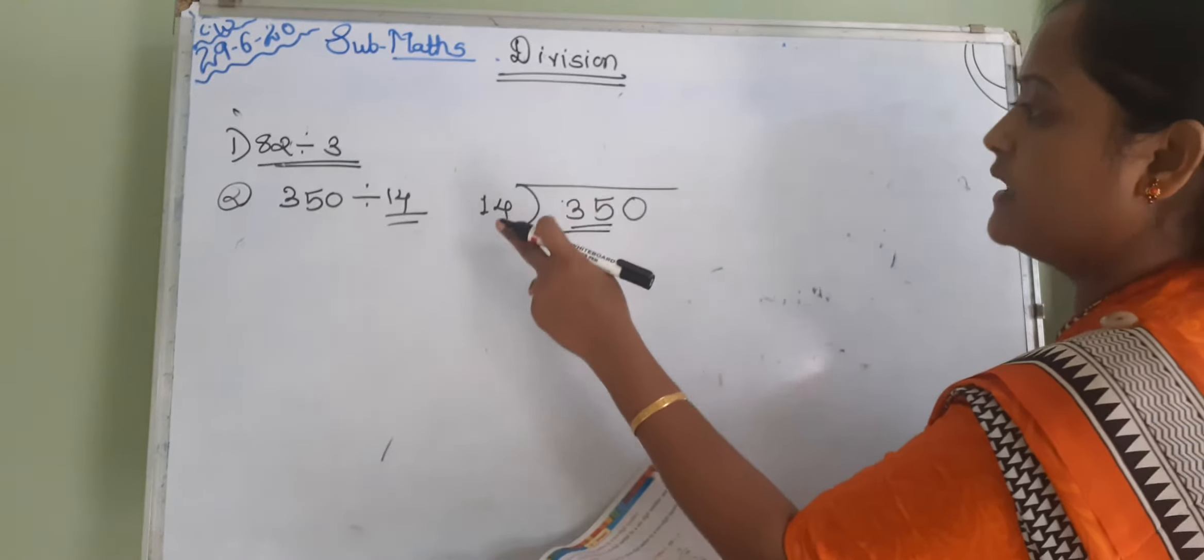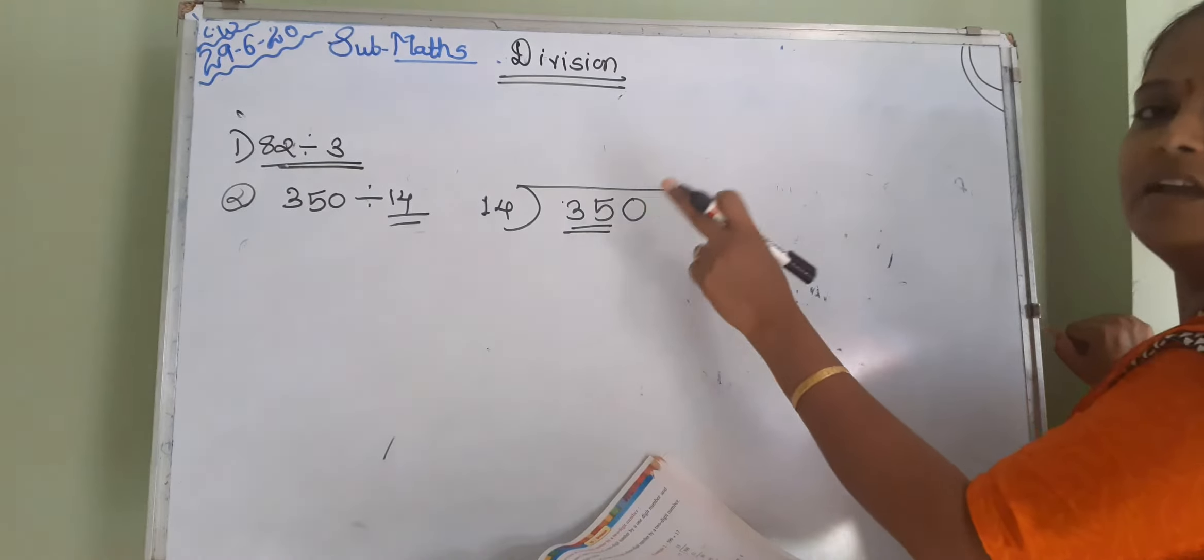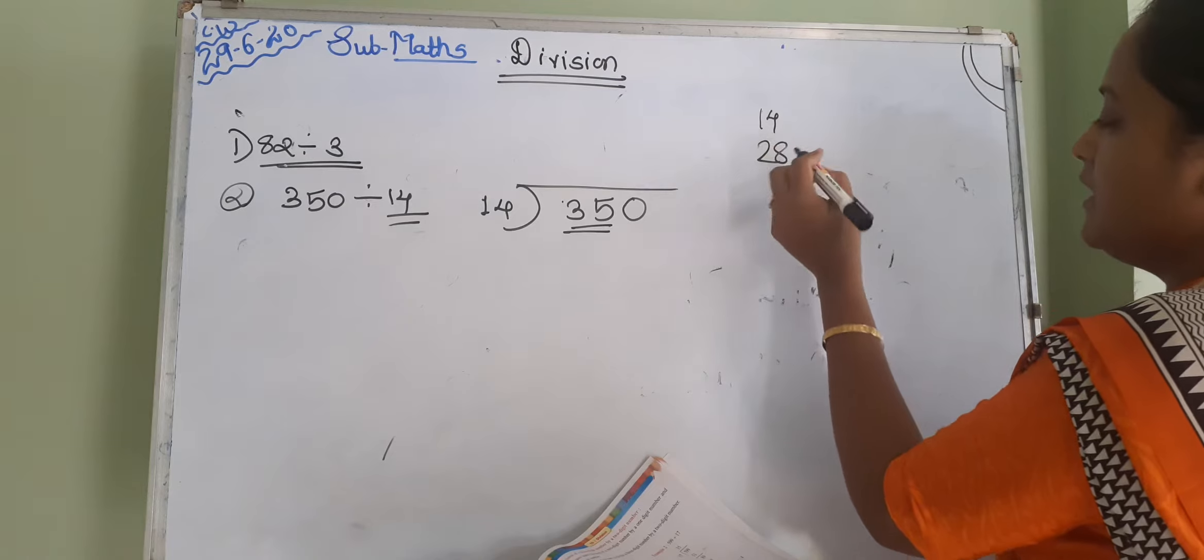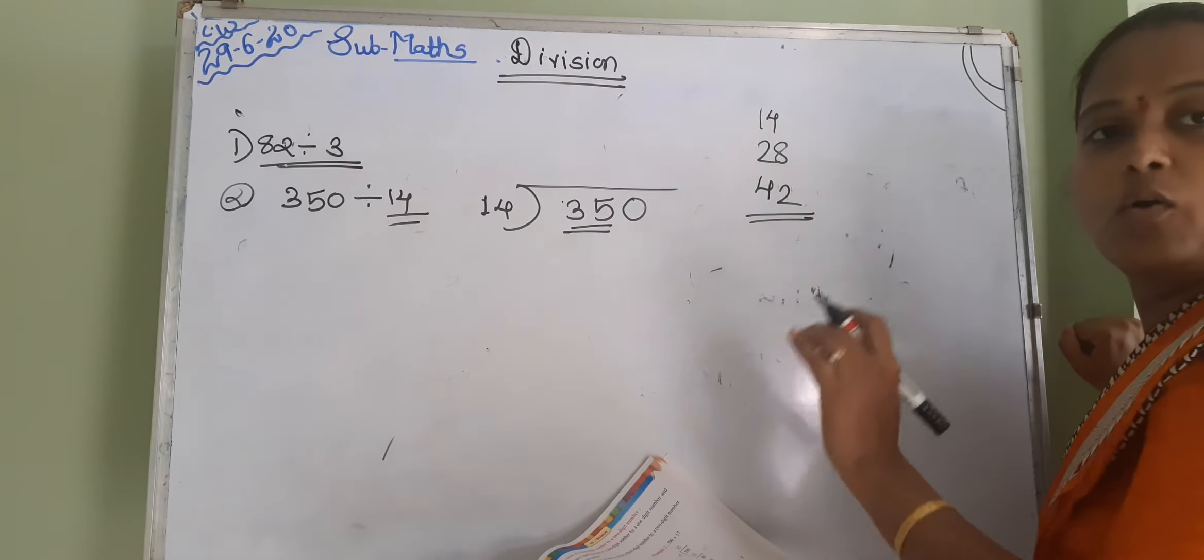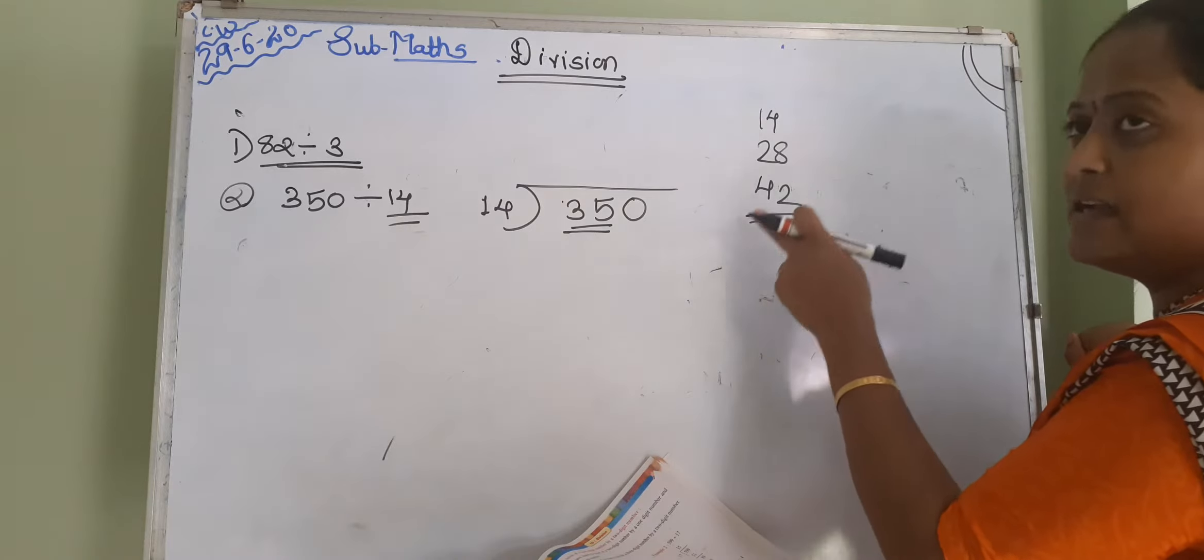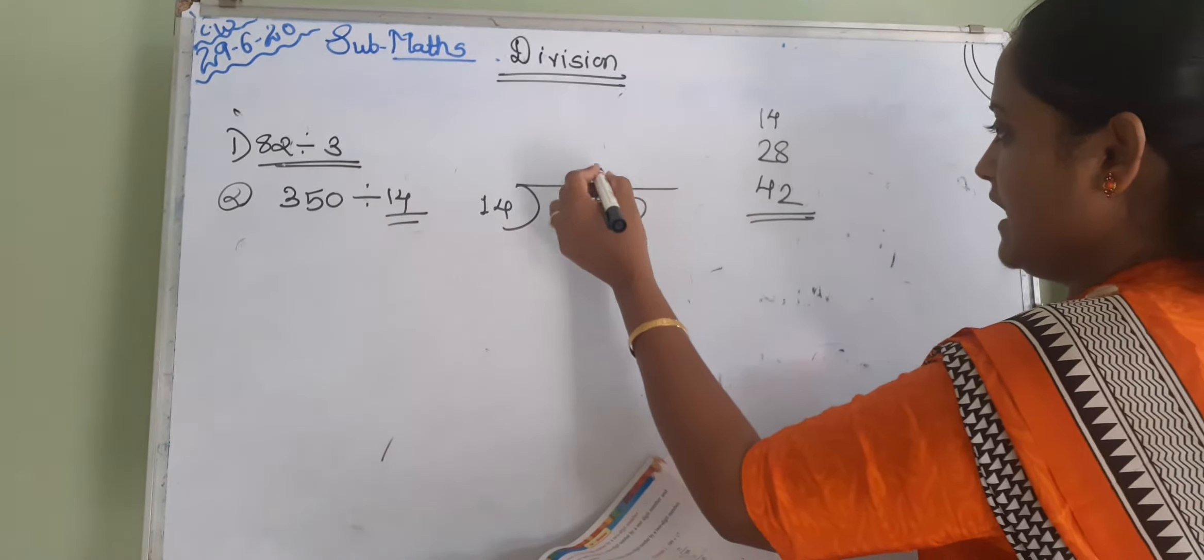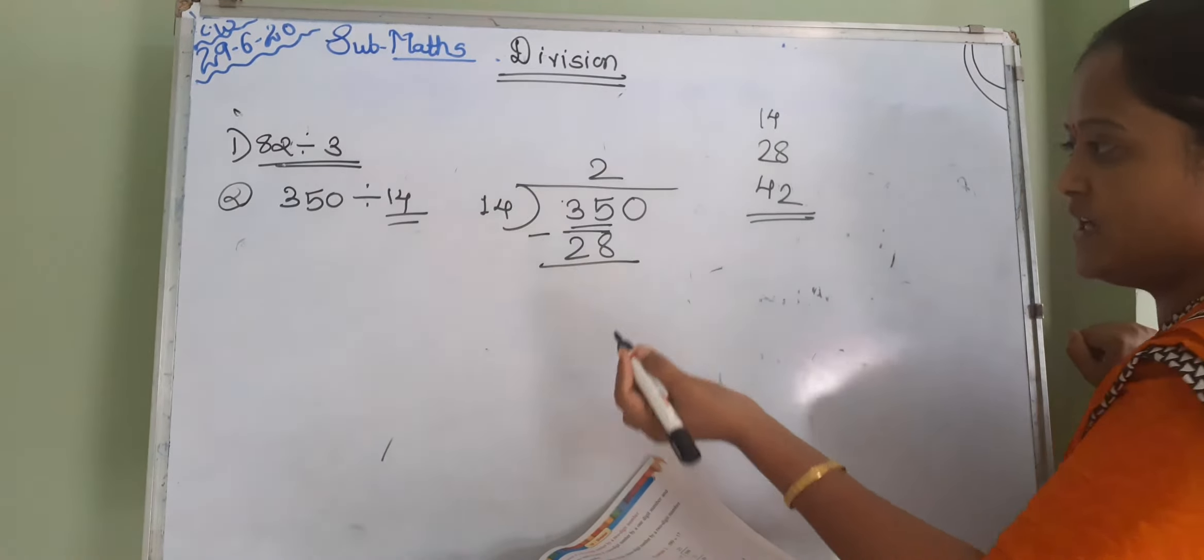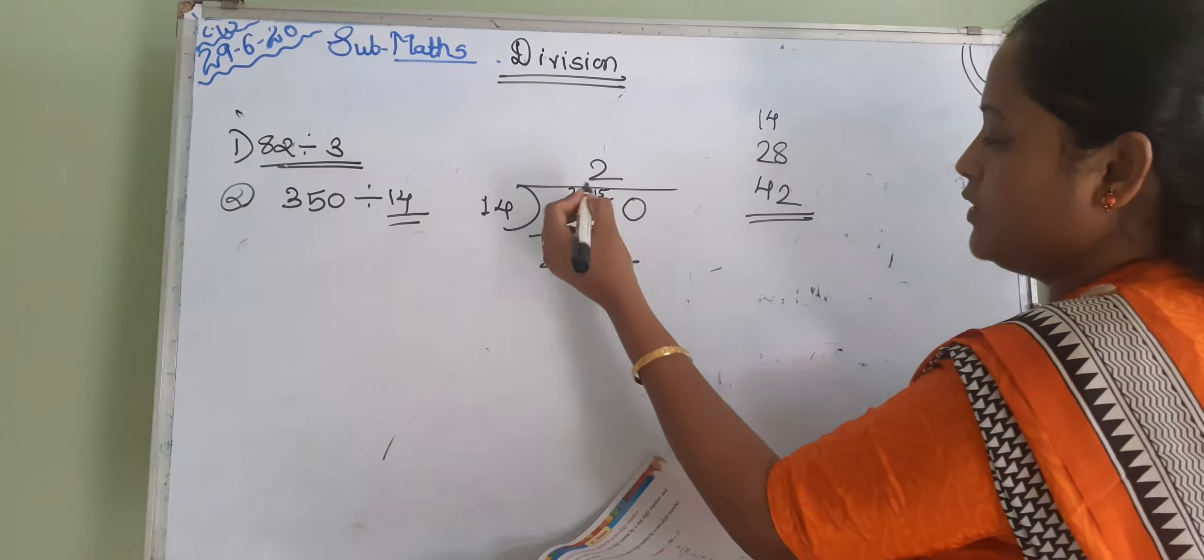So 14 ones, 14; 14 twos, 28; 14 threes, 42. 42 is little bit larger, और 28 is less than 35. So you just take 28, subtract. इधर आएगा 15 और इधर हो जाएगा 2. After 8, 10, 15 कितना आएगा? 9, 10, 11, 12, 13, 14, 15. It's 7. 2 minus 2, it's 0. तो नीचे लिखेंगे.